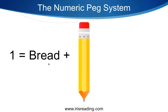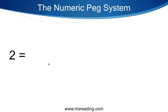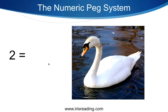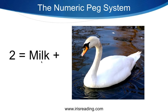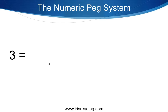Number two is a swan, and we have to memorize milk. Picture a swan swimming in a lake of milk. This makes absolutely no sense — there's no such thing as a lake of milk — but that's actually useful. Things that are weird are always more memorable. So you picture a swan swimming gracefully through a lake of milk.